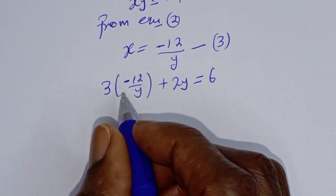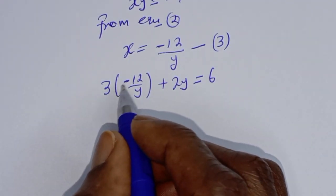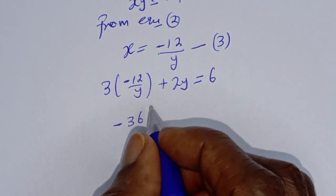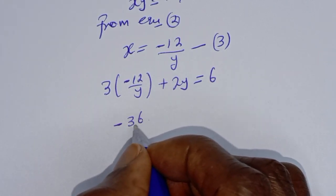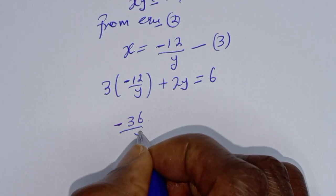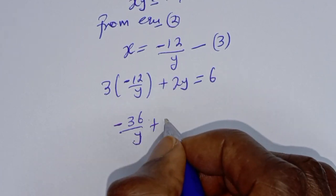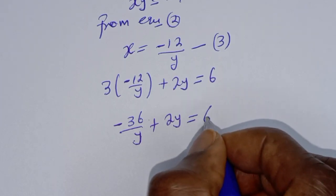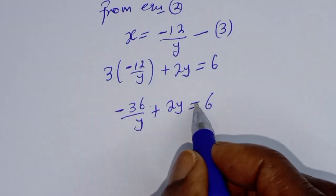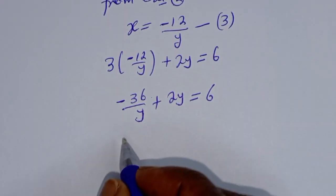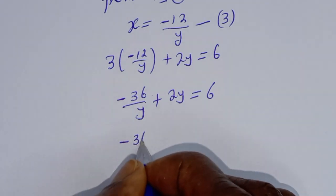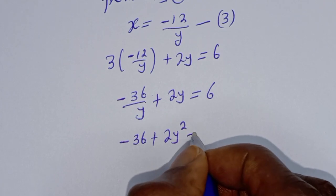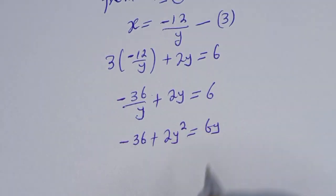This is 3 times -12, that is -36 over y, plus 2y is equal to 6. Now let's multiply all through by y. This gives -36 + 2y² = 6y.